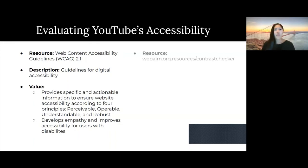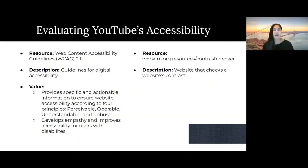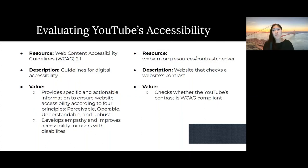Another way we can evaluate YouTube's accessibility is using a contrast checker. In this case, we can use WebAIM's Contrast Checker, which is a website that checks a website's contrast, similar to how I showed you in the example of YouTube's accessibility issue. This is valuable because we can check whether YouTube's contrast is compliant with the WCAG, and it also develops empathy and improves accessibility for users with visual impairments.